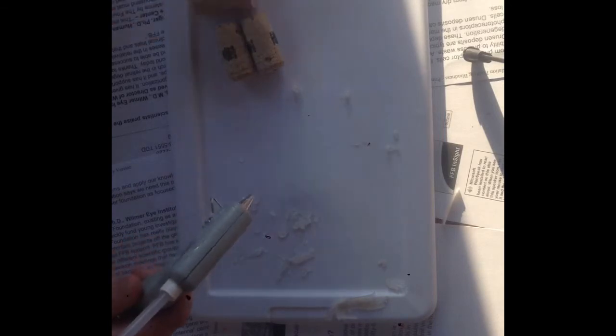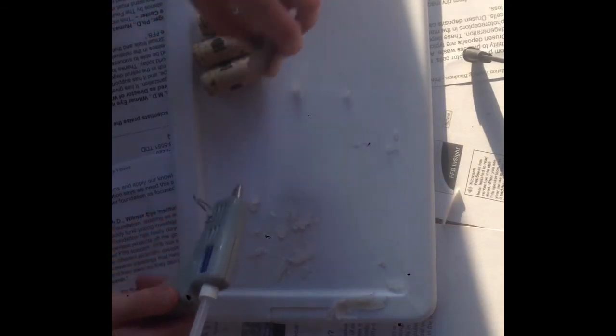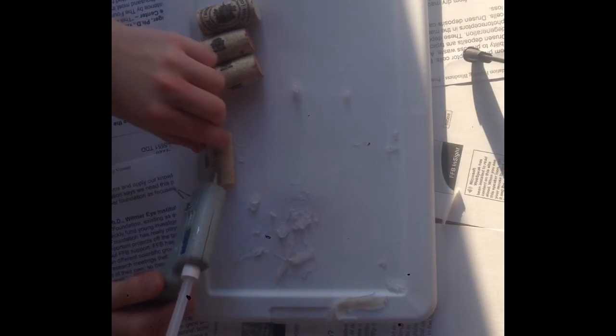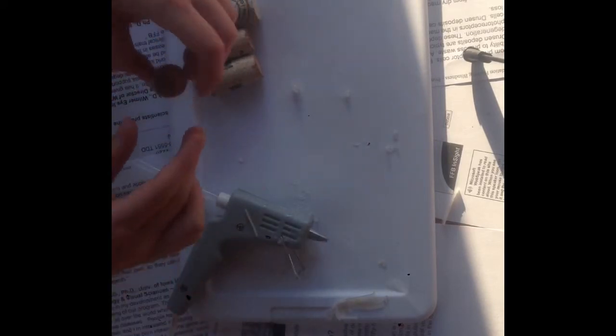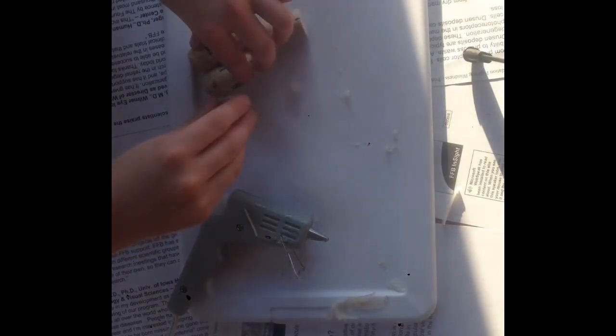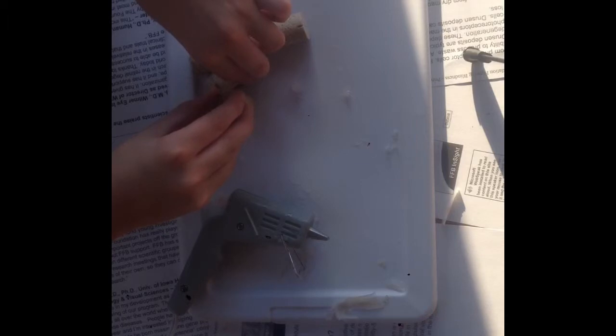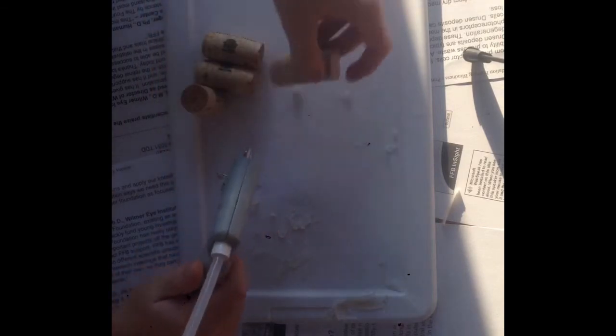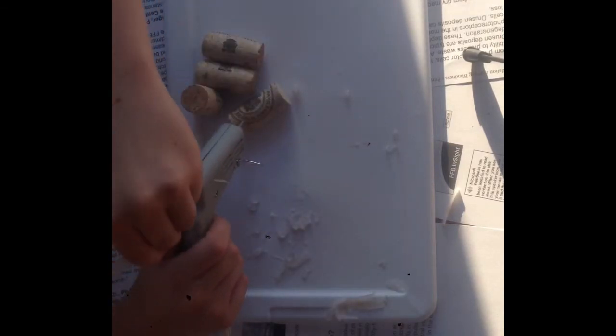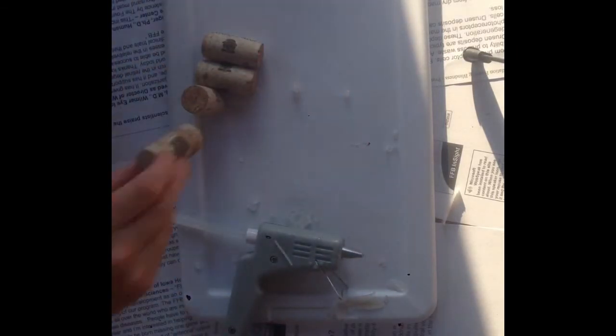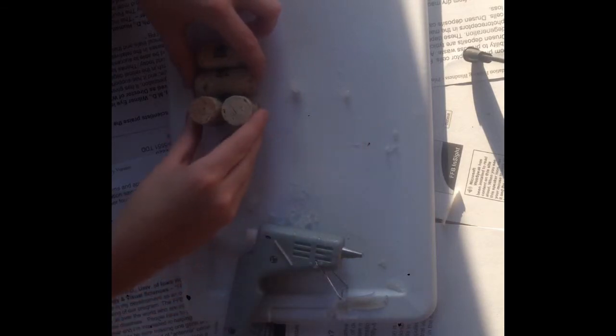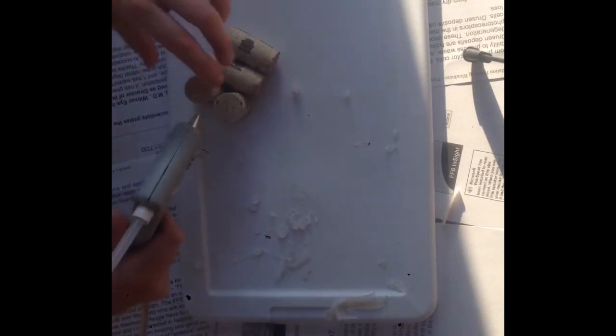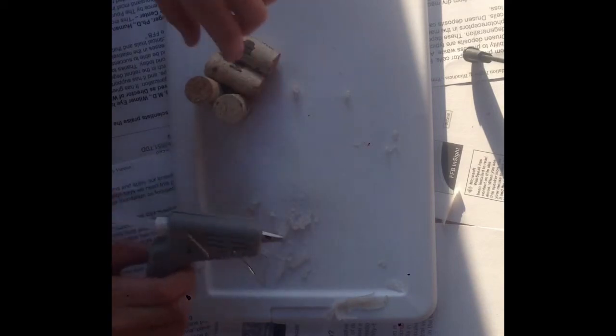Next, take another cork and put some hot glue on the bottom half and put that on the back of one of the original corks and let that one dry. While that one's drying, you can put glue on the bottom half of another cork and put that one next to the other one. For extra strength, you can put some hot glue in the middle so they will stick together.